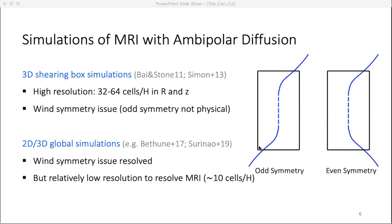In real disks, winds should propagate away from the central star on both sides, corresponding to even symmetry. This issue is generally resolved in global simulations. However, the resolution of existing global simulations is far away from resolving the MRI, and it is unclear whether the results, including the formation of magnetic flux concentration, are robust or not.